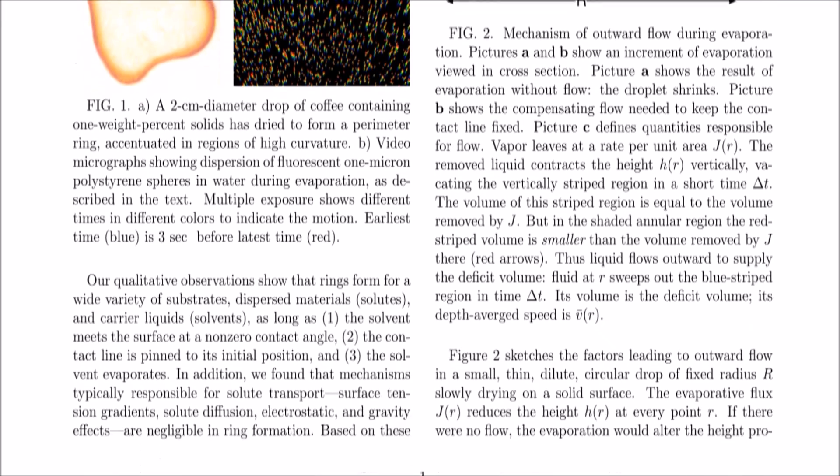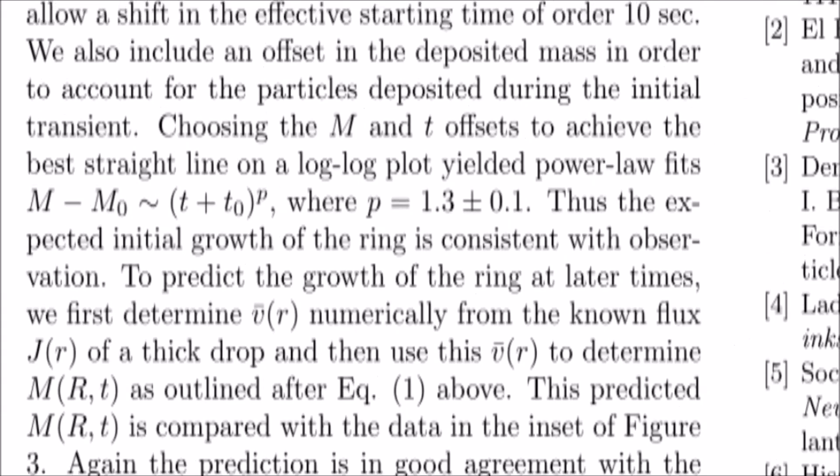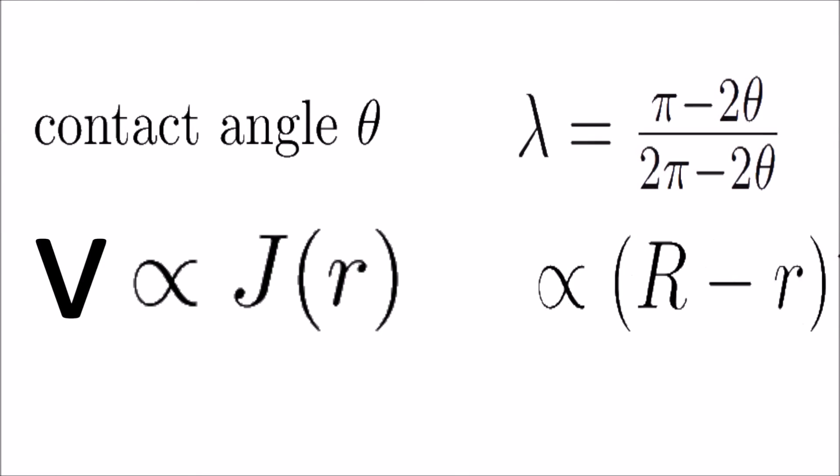Researchers at the University of Chicago tested the theory that this outward flow can carry all the particles to the edge. They found that for a drop with contact angle theta, the outward flow inside the drop is proportional to the evaporation rate, which is in turn proportional to the distance between that boundary we talked about before and the edge of the drop, to the power of this lambda containing the contact angle.